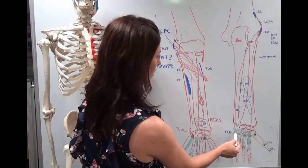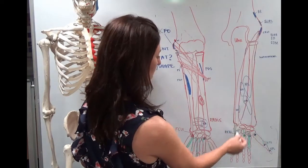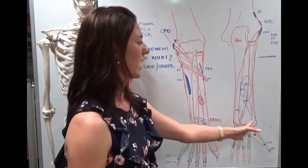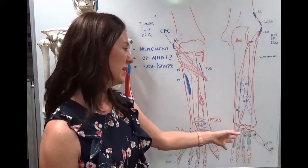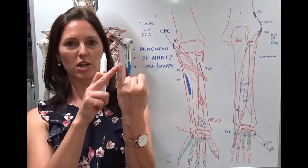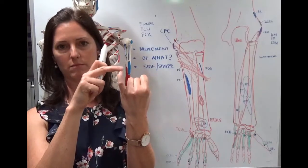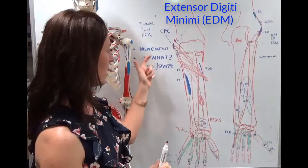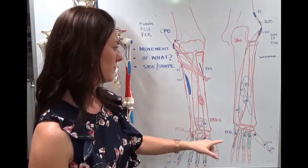Starting with the fifth digit, we've got an extensor digiti minimi. So it's a little tiny slip of tendon, which makes it look like there's five extensor tendons, but actually the fifth one has its own name, extensor digiti minimi, minimal digit, very tiny, still a digit, so you can see why it's been named, that digiti minimi.